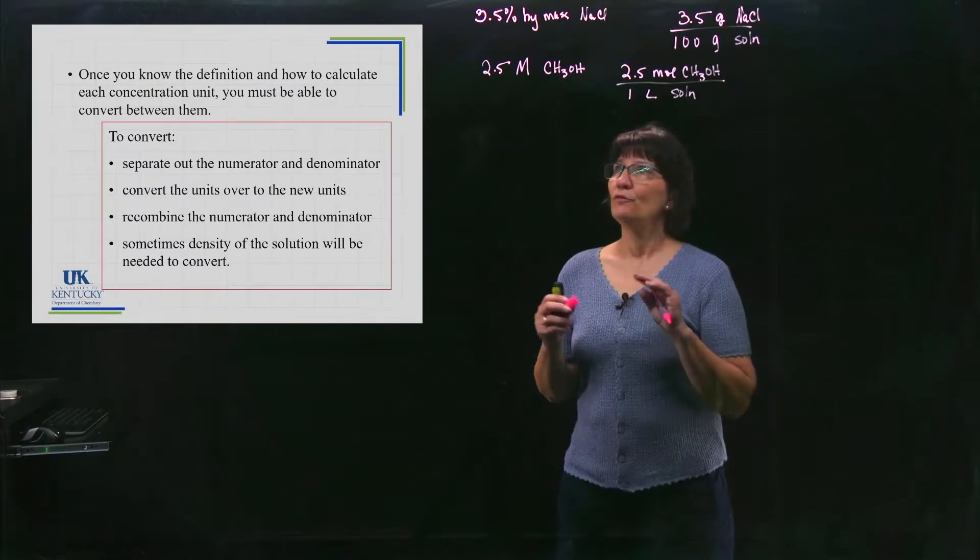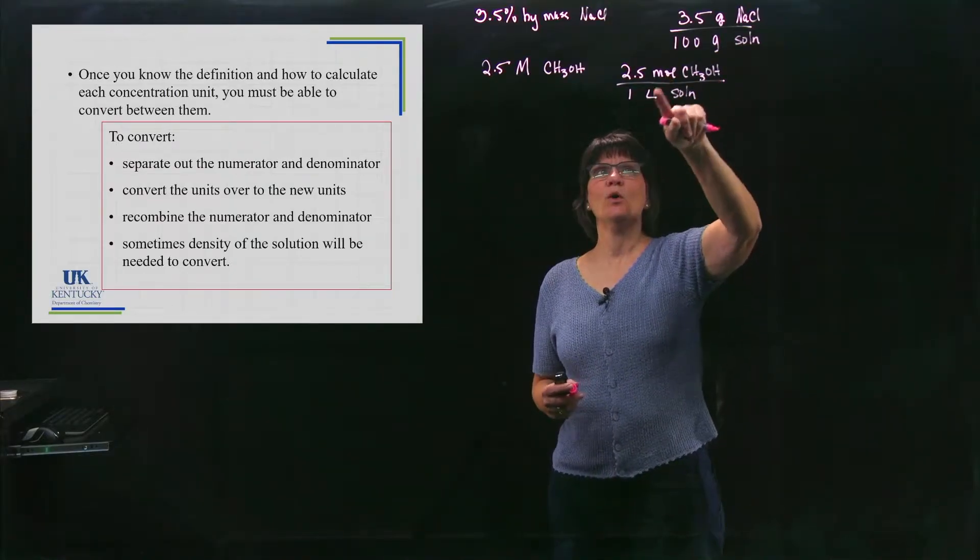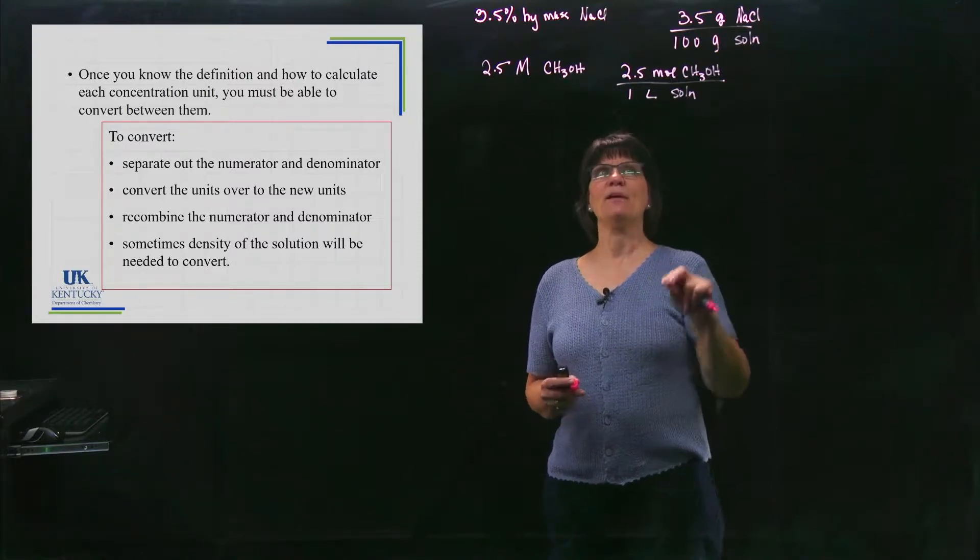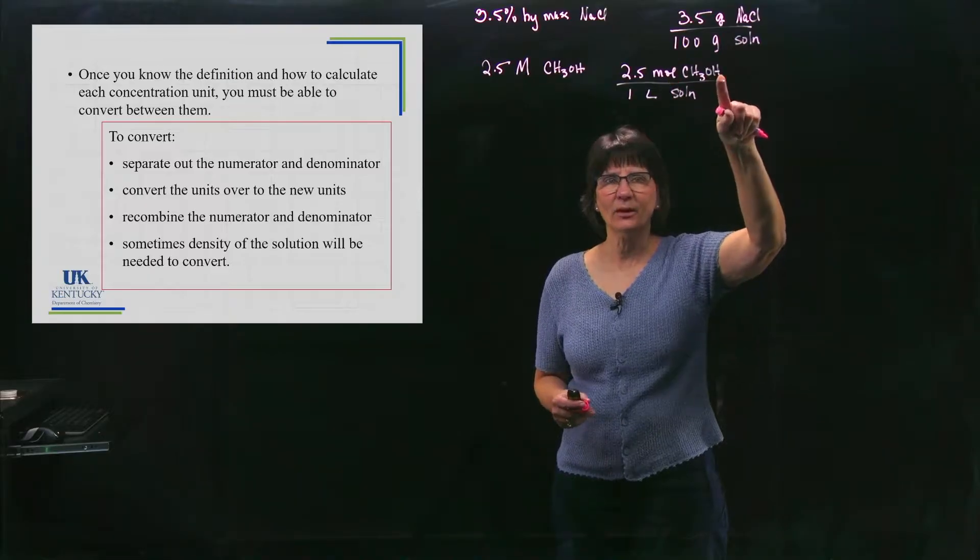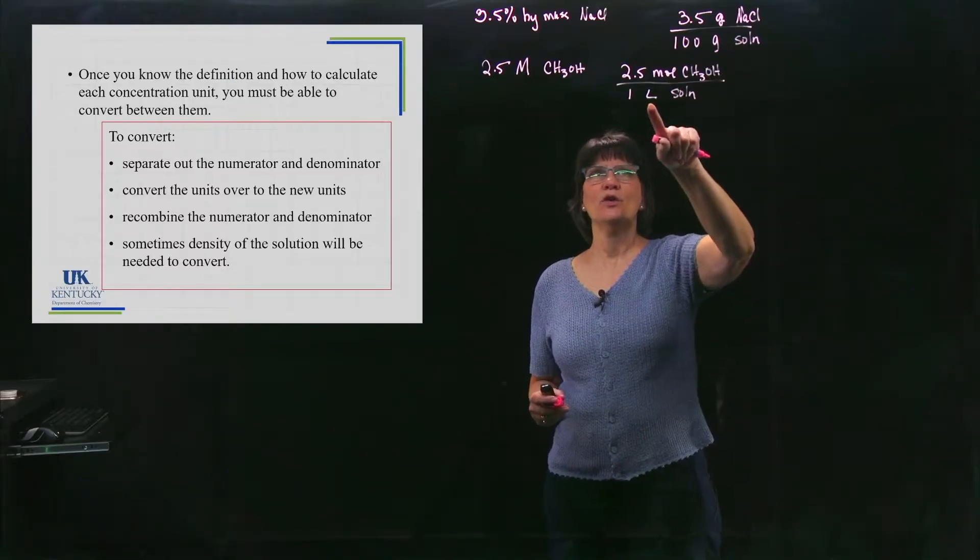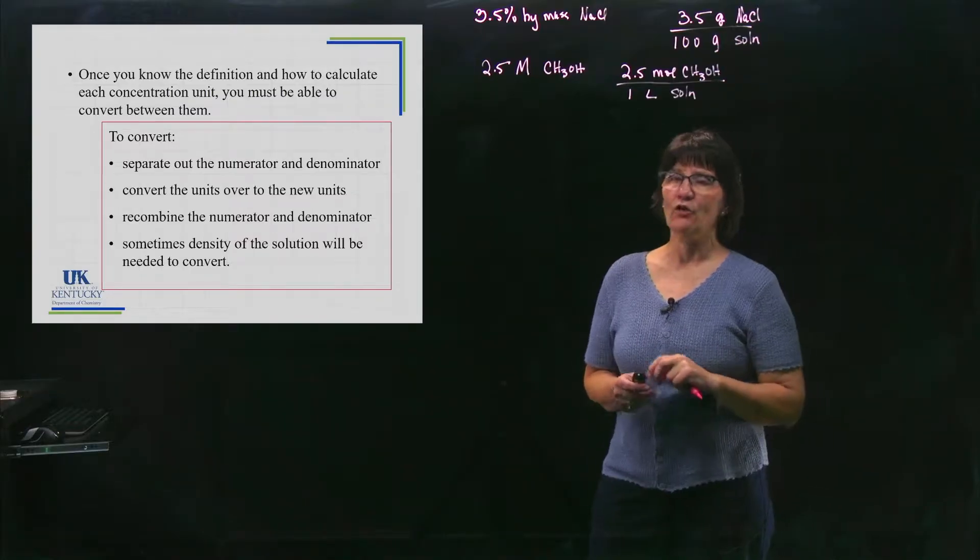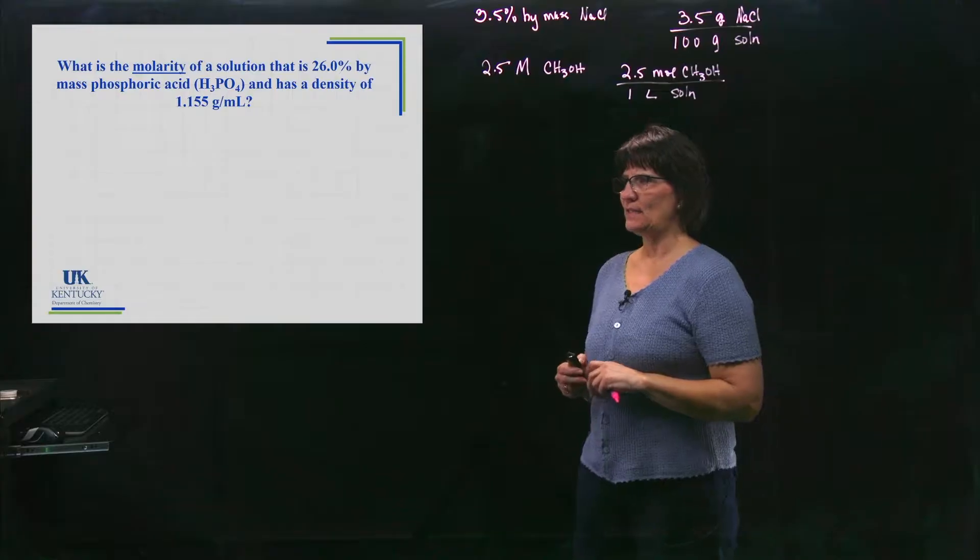Where students fall short is not being real specific. They'll just put moles and liters and not what it is. If you get yourself in the habit of writing the number, the unit and the substance, the number, the unit and what it is, you will make yourself make way fewer mistakes. So let's see some examples.